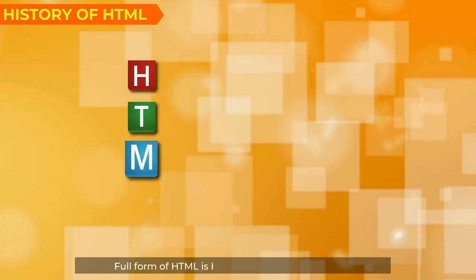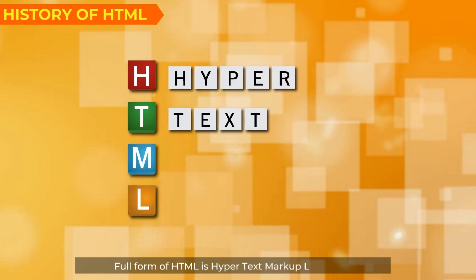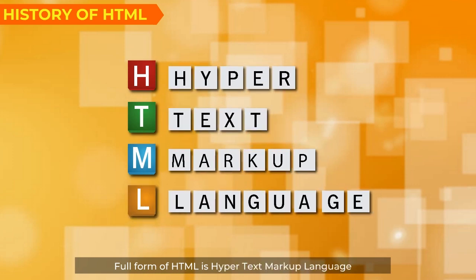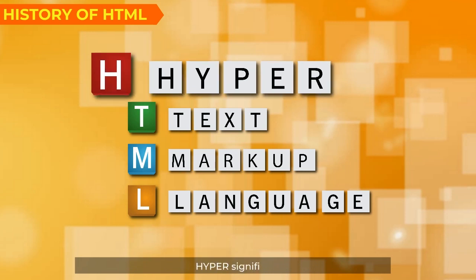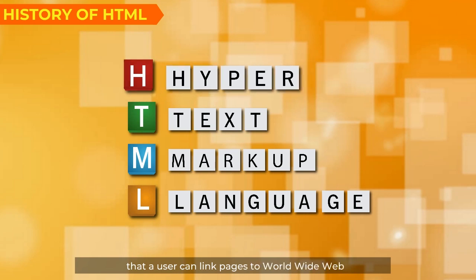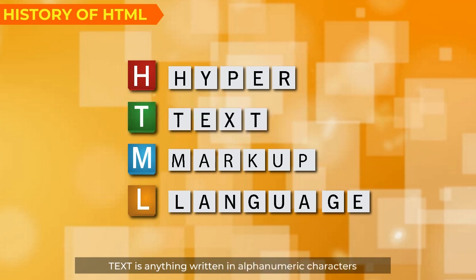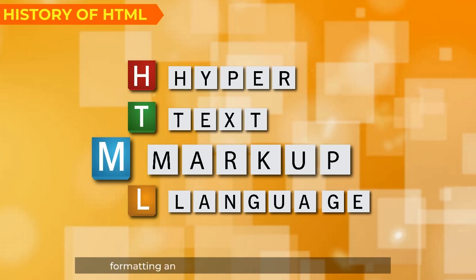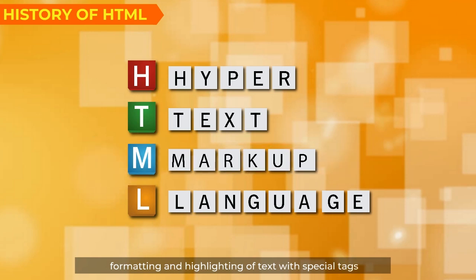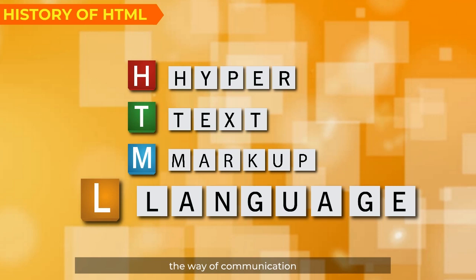The full form of HTML is Hypertext Markup Language. Here, Hyper signifies that a user can link pages to the World Wide Web. Text is anything written in alphanumeric characters. Markup means formatting and highlighting of text with special tags. Language indicates the way of communication between web pages with its own tags and rules.